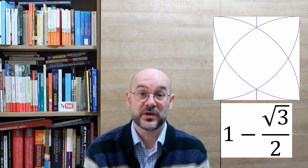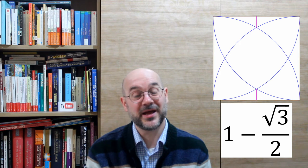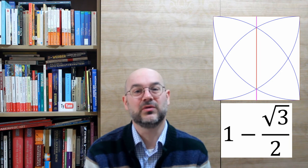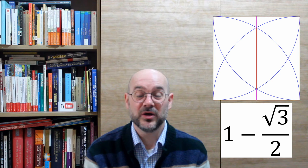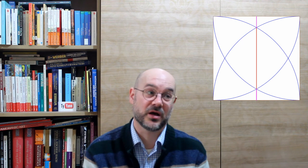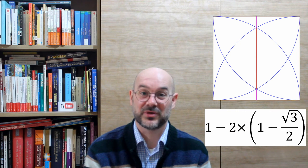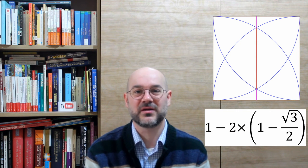And since we know that all together those two little pieces and the length we're looking for are equal to 1, we just have to subtract from 1 twice that little length, because we have twice that little length in there.